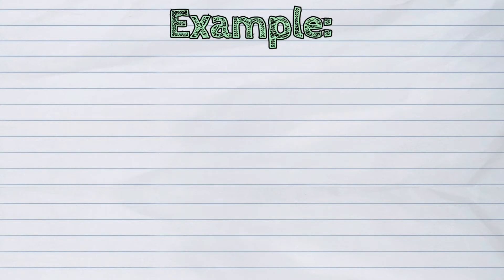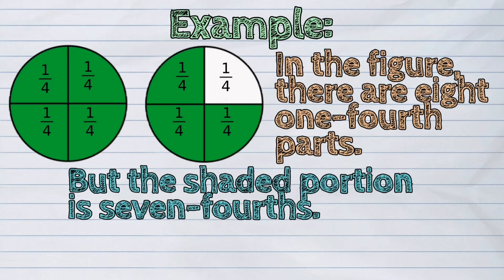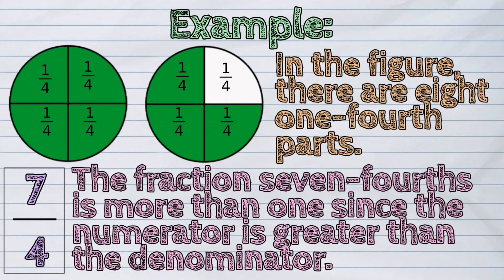Let's study this example. In the figure, there are eight one-fourth parts, but the shaded portion is seven-fourths. The fraction seven-fourths is more than one since the numerator is greater than the denominator.